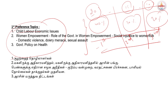For women, there are two ways. One is women-related violence — dowry, domestic violence, and sexual harassment. The other side is women's empowerment. These are two very important topics.